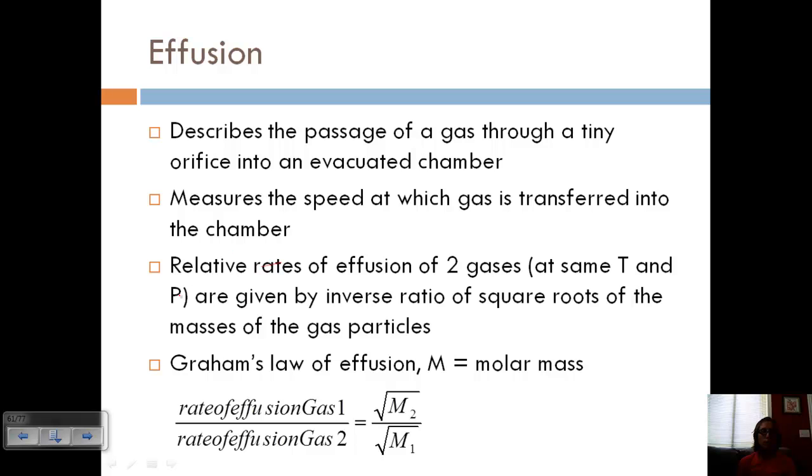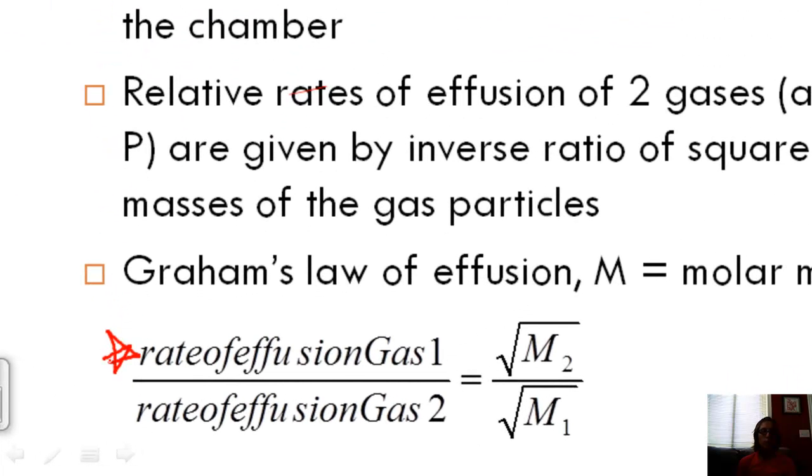So we have the rate of effusion of gas one divided by the rate of effusion of gas two. And so the division of these rates is equal to the square root of the molar mass of gas two divided by the square root of the molar mass of gas one, because remember it's an inverse, so we're flipping them.